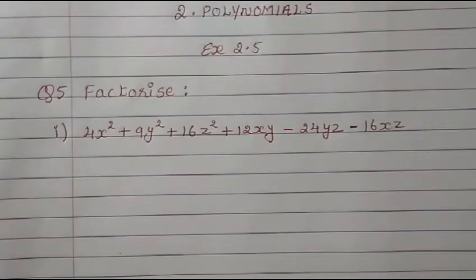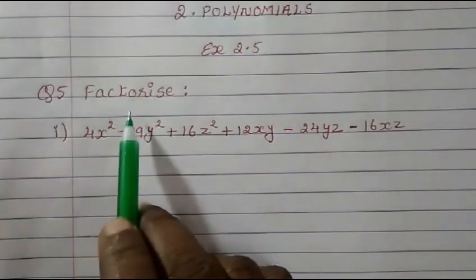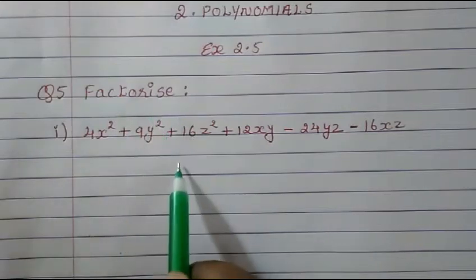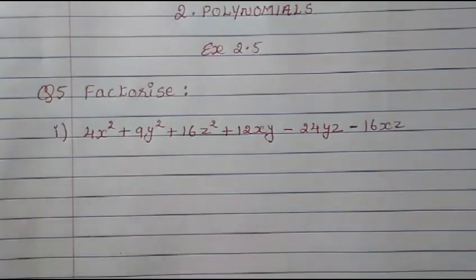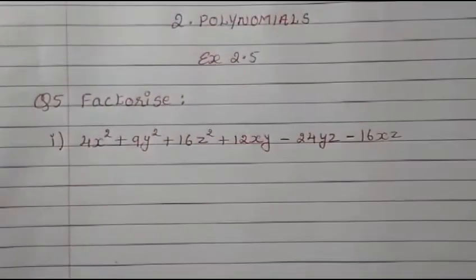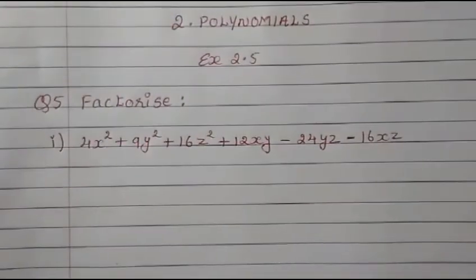Hello students, I am Mary here, welcome to Mash Math. Today from class 9, chapter 2, polynomials, exercise 2.5, question 5, we are going to study factorization. Here two sums are given, and what we have to do is factorize using a suitable identity.